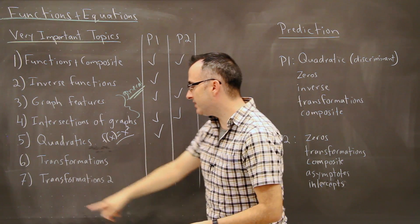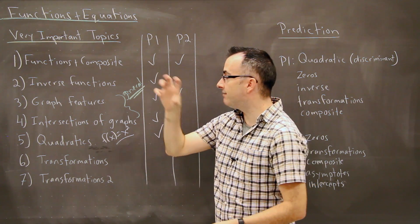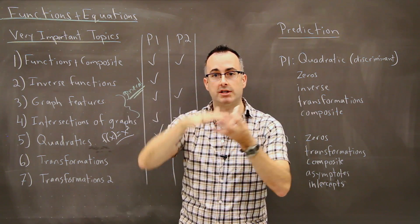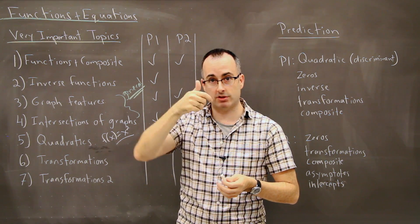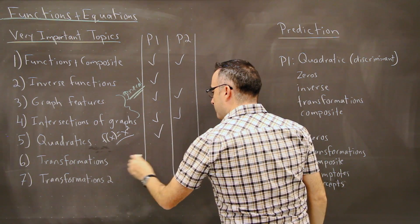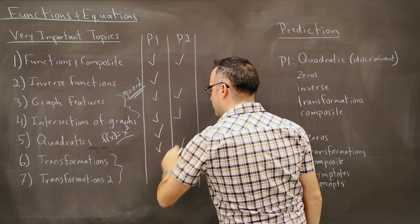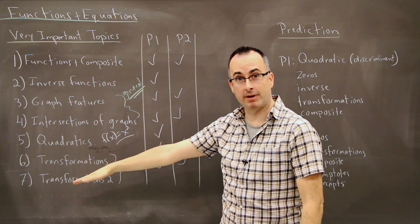Now as far as the next one, the six and seven, these are just transformations. These are things where what you do is you take a function, any function, you can move it up or down, left or right, you can stretch it horizontally or vertically, you can reflect it across the x or the y-axis, and those show up. This is just more complicated versions of them, but they show up pretty evenly on paper one and paper two. So these are the very important topics.